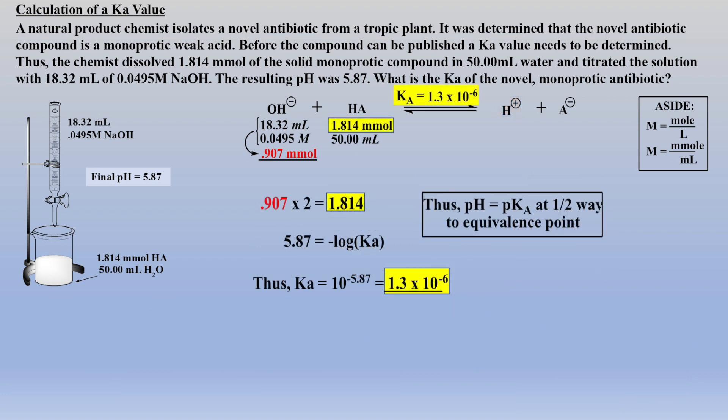While we have demonstrated three different ways to calculate the Ka value, the first way was clearly the easiest, but it relied on recognizing that we were halfway to the equivalence point.